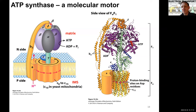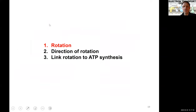The F0 domain is a rotator that is rotating and moving the shaft, and in doing so it moves our alpha and beta domains. This movement is what allows us to make ATP from ADP and phosphate. So it's a molecular motor. Being a motor and a rotator, we want to understand how this rotation actually works — first the rotation, then the direction, and finally how this rotation is linked to ATP synthesis.